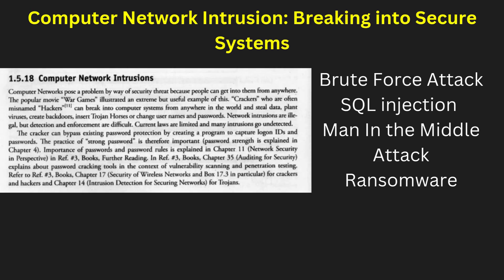Organizations use firewalls, encryption, and intrusion detection systems to protect their networks from cyber threats. Governments and private companies employ cybersecurity experts to monitor and prevent unauthorized access. Users can also enhance security by using a Virtual Private Network (VPN) and enabling two-factor authentication. As cybercriminals develop more advanced methods, network security remains a top priority for businesses worldwide. Understanding how network intrusion happens helps in implementing better protective measures.